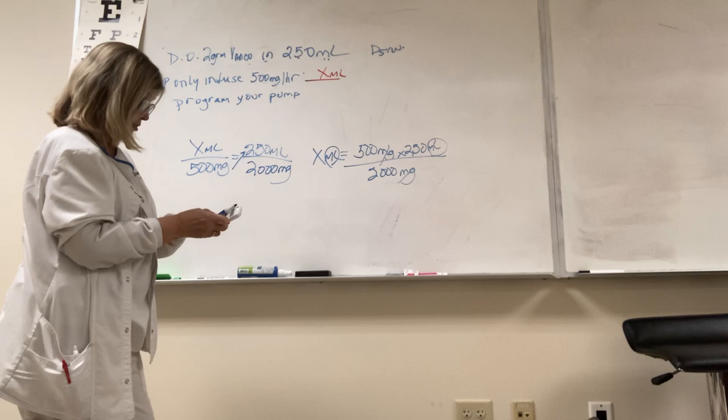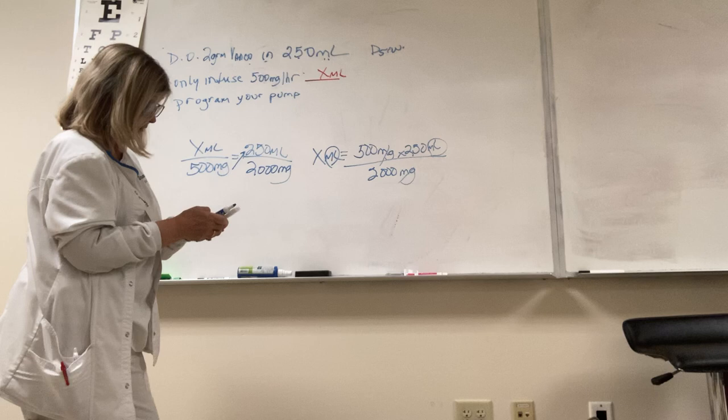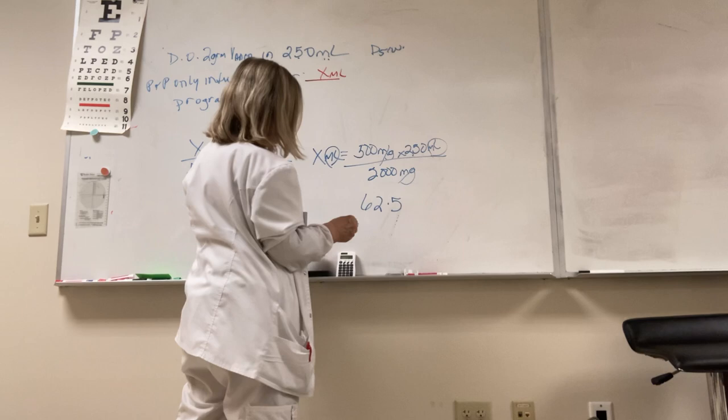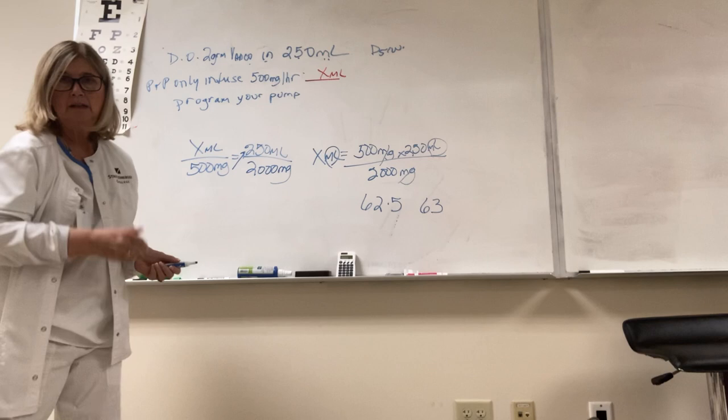And I'm not even going to pretend to do this in my head. So I'm going to say 500 times 250 divided by 2,000, 62.5. So 62.5. I would verify this. Actually, I would do this math count twice. So I have to round that up. So that would round up to 63.